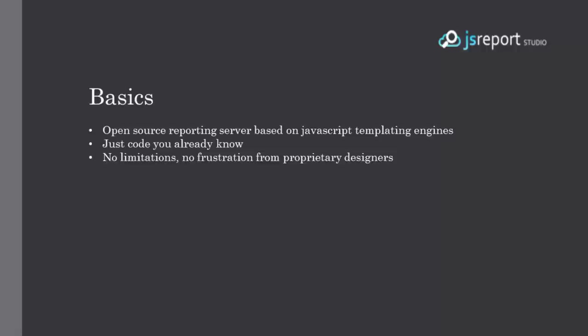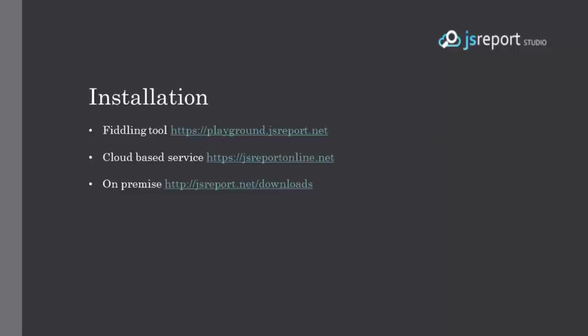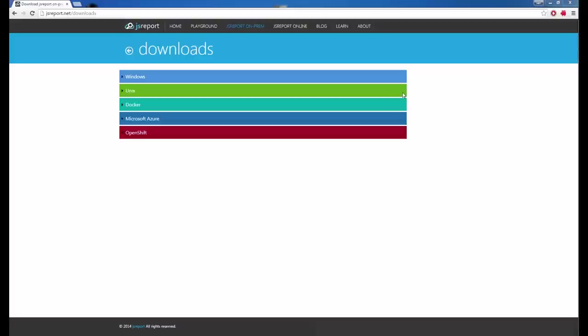JS Report is an open source reporting server based on JavaScript and templating engines. JS Report takes a slightly different approach than the other solutions. Designing reports in JS Report is all about code and standard technologies like JavaScript. You won't get stuck with proprietary formats or designers. This gives you the full power and also allows you to use the technology stack you already know. JS Report can be installed to your own on-premise Windows or Linux servers, or you can use it through the cloud offering JSReportOnline.net. There is even a limited playground you can try without any registration.